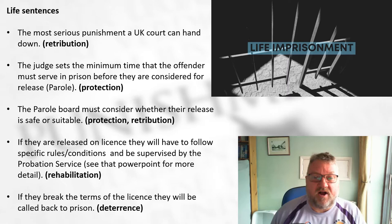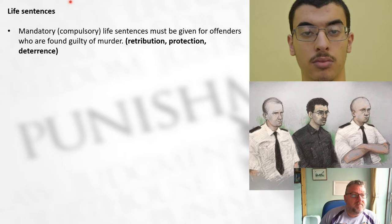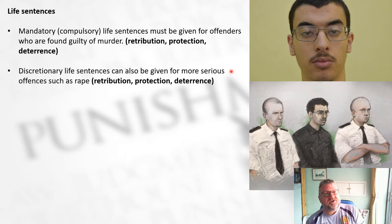Life sentences are mandatory - compulsory - for anyone found guilty of murder. If you take a life, you will be given a life sentence, carrying elements of retribution, protection, and deterrence. A life sentence can also be given for more serious offences such as rape, though it's not mandatory there - again carrying retribution, protection, and deterrence.